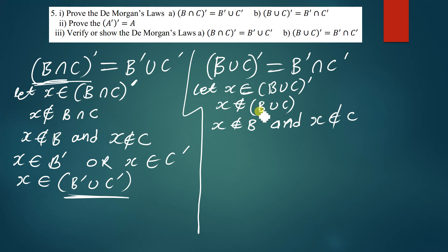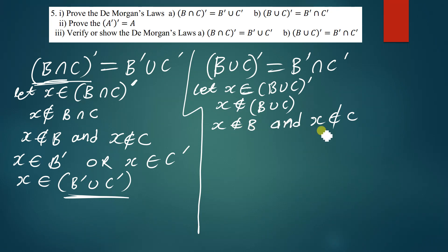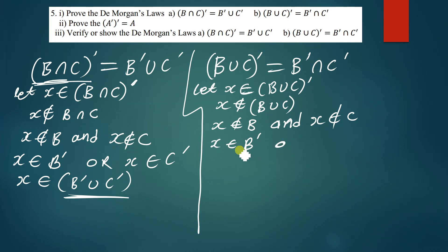We use 'and' here because when we talk about the union set, it is the combination of B and C. So if B and C put together does not contain x, it means that x is neither in B nor in C. So if x is not a member of B and x is not a member of C, we can conclude that x is a member of Bᶜ and also a member of Cᶜ.